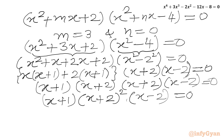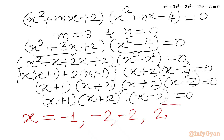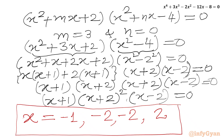Applying the zero product rule, our final answers are x = −1, x = −2 (with multiplicity 2), and x = 2. So we have four solutions in total. I hope friends you will like this video. Thank you so very much for watching — do not forget to like, share, and subscribe. Bye bye!